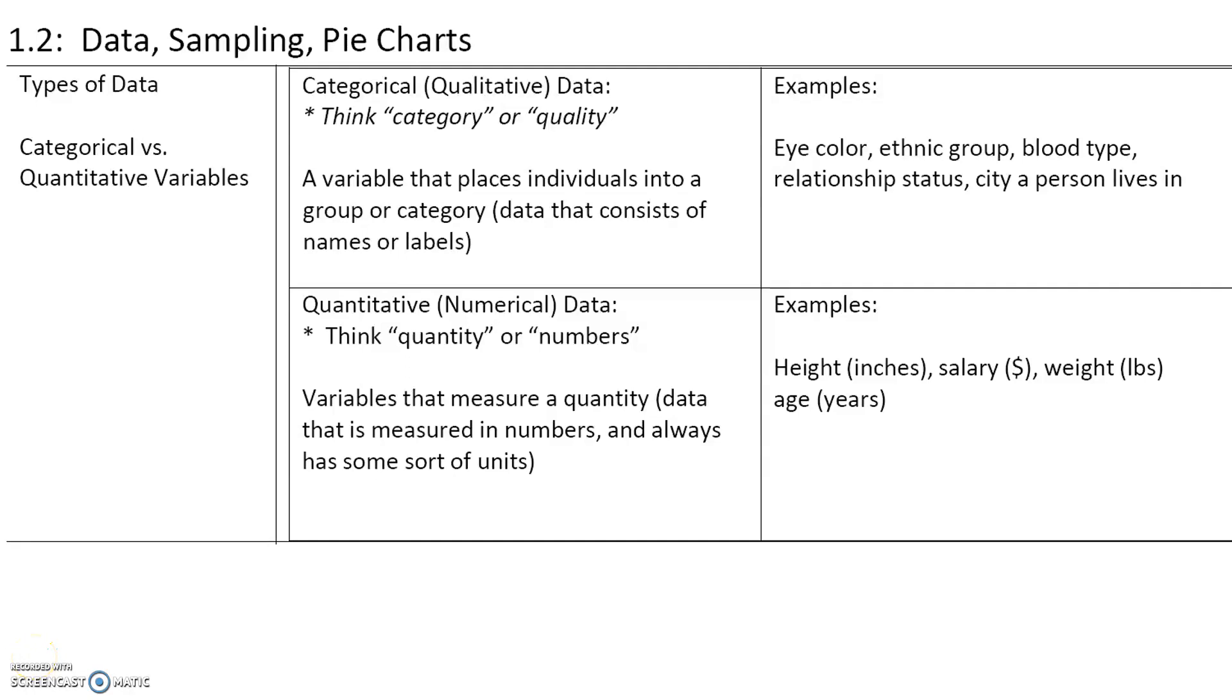In this section, we're going to talk about data, sampling, and pie charts. There are two types of data: categorical or qualitative data, and quantitative or numerical data.